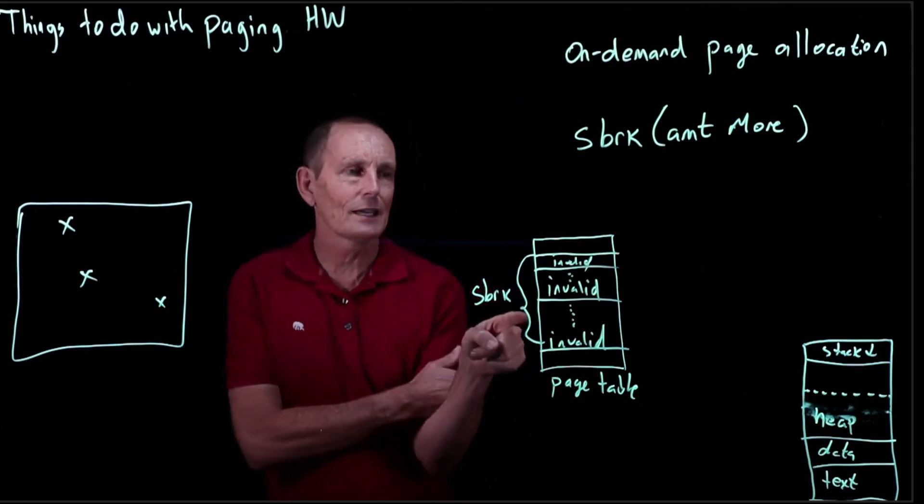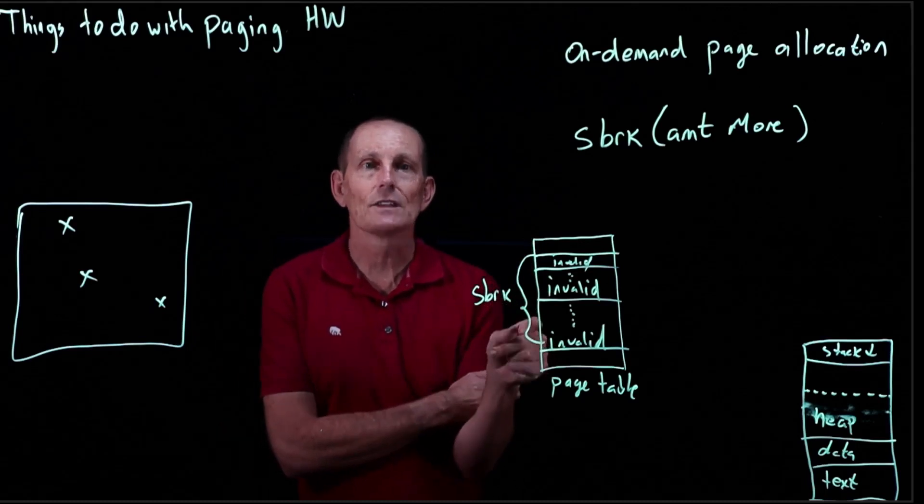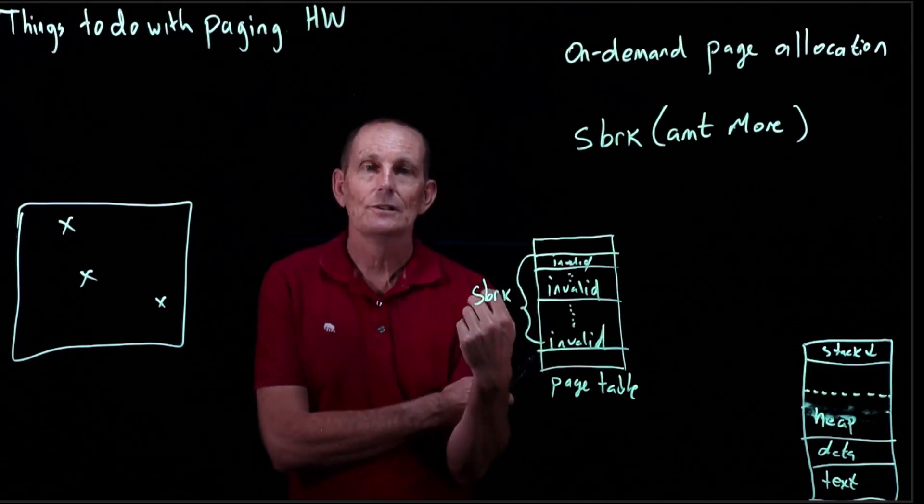And the kernel can look and say, wait a second, this is the area that has already been allocated for s-brake. So the user asked for this. So therefore, I'd better go ahead and allocate it now, on demand.